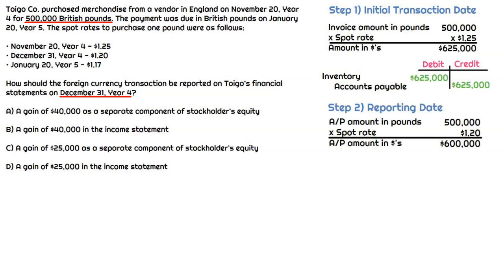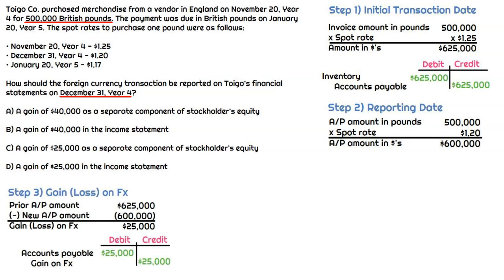Moving forward to the reporting date: we had that invoice valued at $625,000 in dollars, but now we need to reassess the value based on the December 31, year four spot rate. In step two, we take that accounts payable amount — 500,000 pounds — multiplied by the spot rate of $1.20. That tells us the invoice now has a value of $600,000. Toygo thought they would have to pay $625,000 based on the initial spot rate, but now it's down to $600,000. That results in a gain on foreign exchange of $25,000 for the year four financial statements.